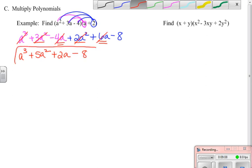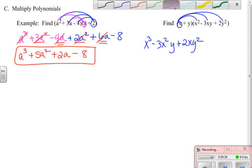One more binomial trinomial multiplication. I'm going to take x times each piece. So I have x cubed minus 3x squared y plus 2xy squared. Take the y times each of the pieces. Plus x squared y minus 3xy squared plus 2y cubed.